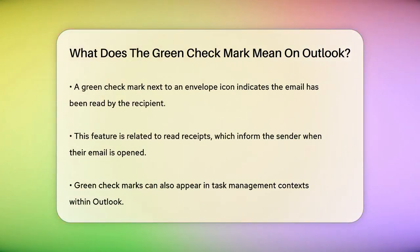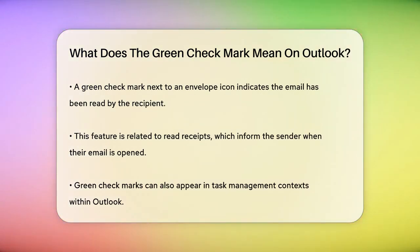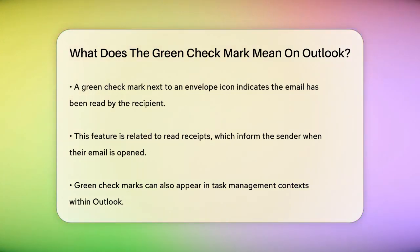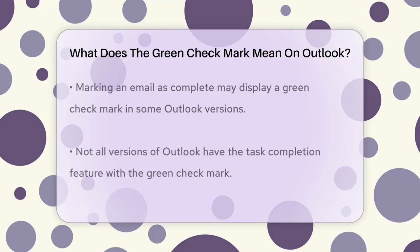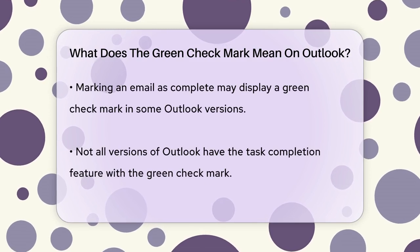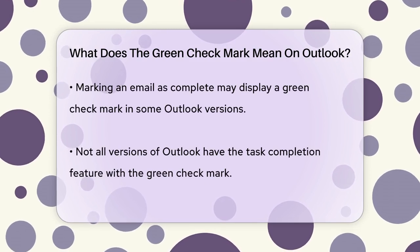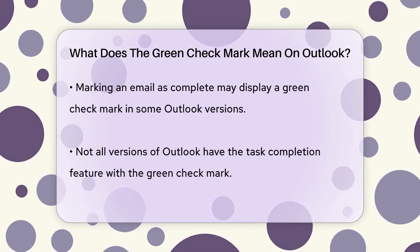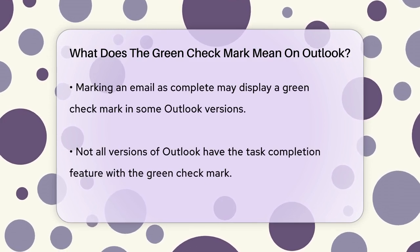Another place you might see a green check mark is in your inbox. If you notice an envelope icon with a green check mark, it typically means that the email has been read by the recipient. This is often associated with read receipts, where the sender has requested to know when their email is opened.